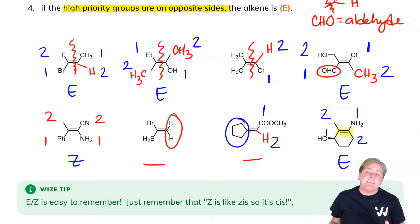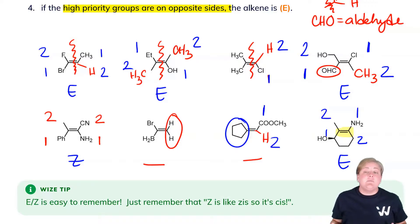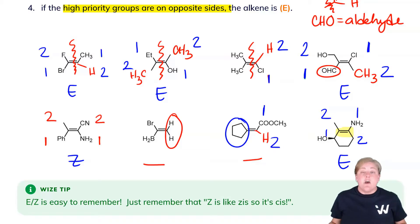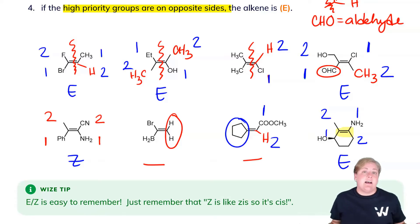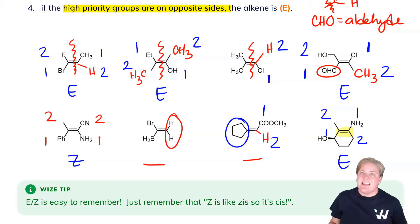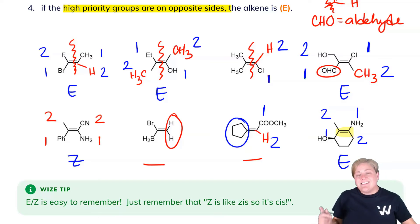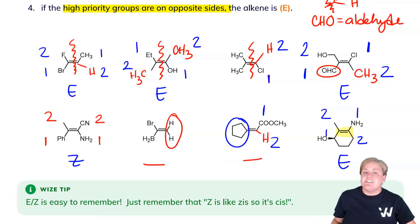There's an important take-home message from this section. With a disubstituted alkene, we're dealing with cis versus trans nomenclature — are they on the same side or opposite sides? With more decorated alkenes, you cut it in half, take a look at either side, determine which group has higher priority, and see if they're on the same side or opposite sides. If they're on the same side, it's Z; if they're on opposite sides, it's E. An easy way to remember: Z looks like the letter Z, so it's cis.